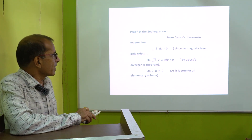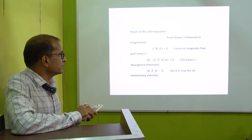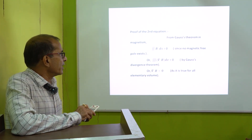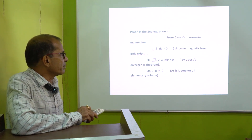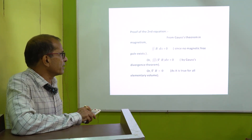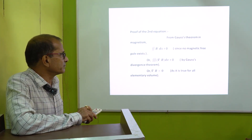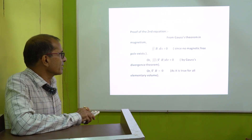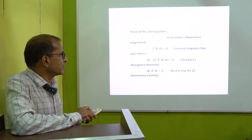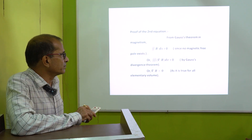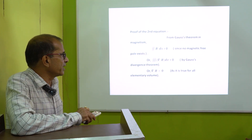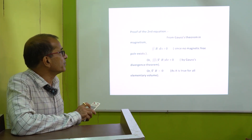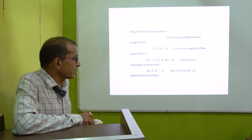In any elementary volume, we must get two poles simultaneously, not a single pole. So the right-hand side is 0. We have again implemented Gauss's divergence theorem, transferring the surface integral to volume integral. As it is true for any elementary volume, divergence of B equal to 0. We have proved the second equation.